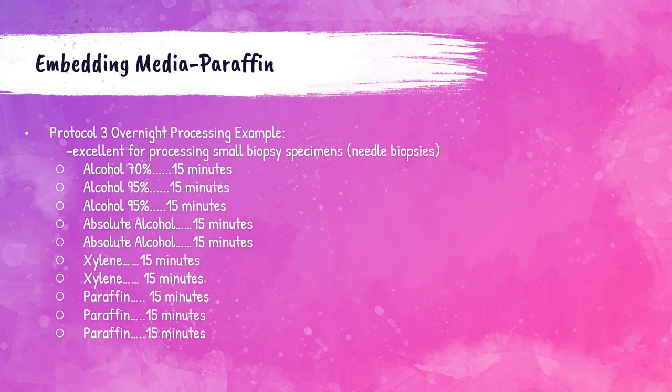Protocol three utilizes vacuum and heat only with paraffin, and is excellent for needle biopsy specimens. This protocol uses 15 minutes of 70% alcohol, 15 minutes of 95% alcohol, another 15 minutes of 95% alcohol, two steps of absolute alcohol at 15 minutes each, two steps of xylene at 15 minutes each, and then three steps of paraffin at 15 minutes each.